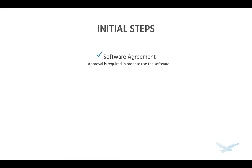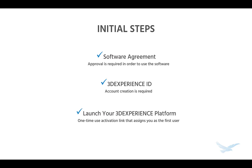So the initial steps. First, we need to agree to the software agreement. Without this step we won't be able to proceed forward and initiate your 3DEXPERIENCE tenant. In order to sign the software agreement, a 3DEXPERIENCE ID is required. If you don't have one, you'll need to create one at this time.